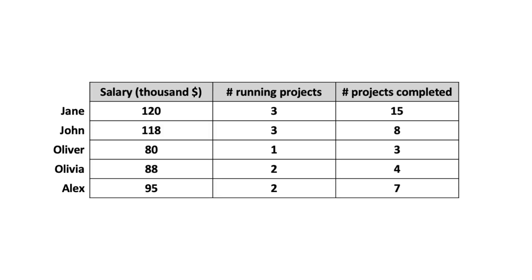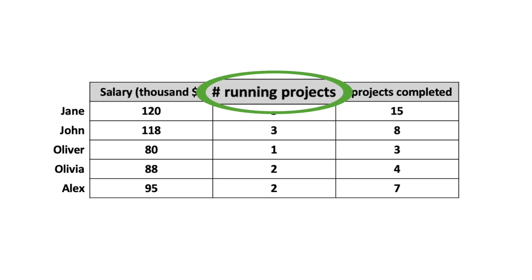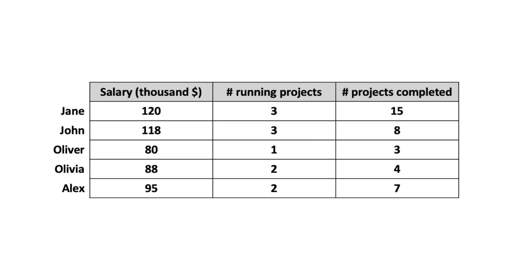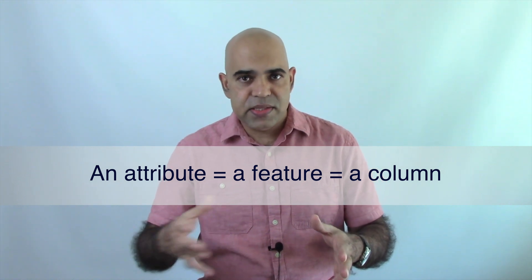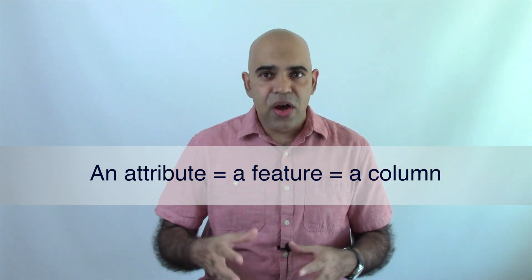Now let's talk about what a feature is. Features are elements used to characterize objects. In tabular data, features are generally kept in columns — each column of a data table is a feature. In this example, to characterize each object, we have three features: salary, number of running projects, and number of completed projects. Therefore, a feature equals a column of a data table. Another name for the term feature is attribute — an attribute equals a feature equals a column of a data table.